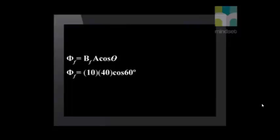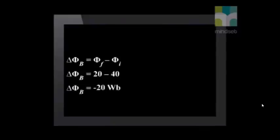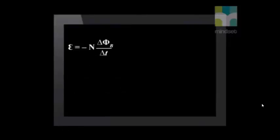Next, let's calculate the flux through the square after it's rotated. Now we have to take into account the fact that the square is at an angle of 60 degrees. Substituting the values and calculating gives us a final magnetic flux of 20 Weber. So the change in magnetic flux is the final magnetic flux minus the initial flux, giving a difference of negative 20 Weber. The magnetic flux decreases because, as the square is rotated, fewer magnetic field lines cut through it.